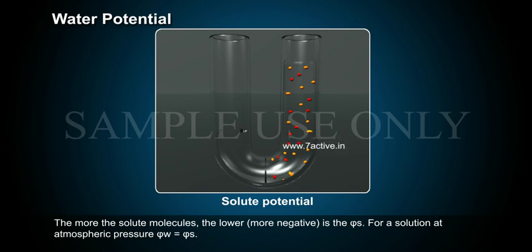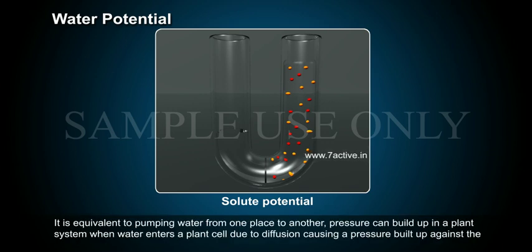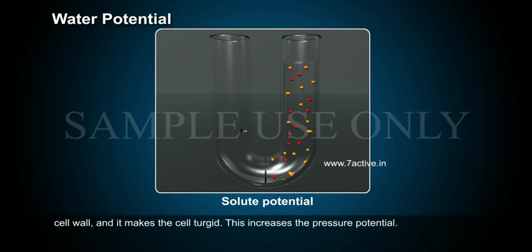For a solution at atmospheric pressure, Psi W equals Psi S. If a pressure greater than atmospheric pressure is applied to pure water or a solution, its water potential increases — equivalent to pumping water from one place to another. Pressure can build up in a plant system when water enters a plant cell due to diffusion, causing a pressure buildup against the cell wall and making the cell turgid. This increases the pressure potential.